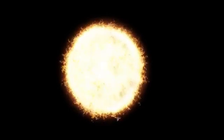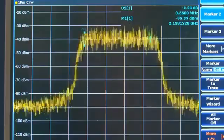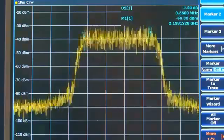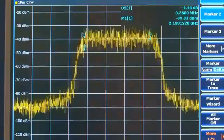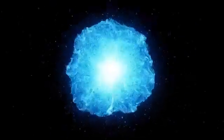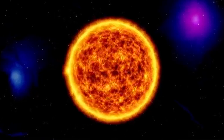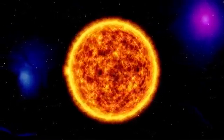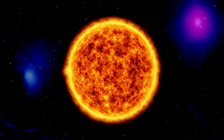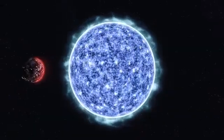In the case of Betelgeuse, a red supergiant nearing the end of its life cycle, this balance has become increasingly unstable. As the star depletes its core hydrogen fuel, the nuclear fusion processes that sustain it undergo significant changes. When hydrogen fusion slows in the core, radiation pressure decreases, causing the gravitational pull to momentarily gain the upper hand. This results in the contraction of the star's outer layers.